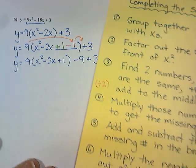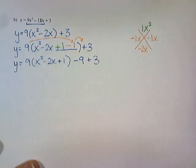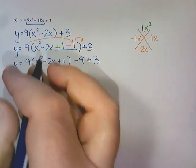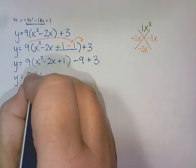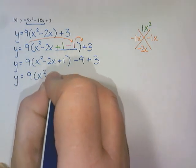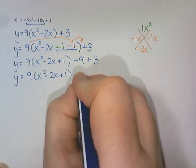All right, what does it say on the other side of my card? It says simplify the numbers outside of the bracket. So that -9 plus 3. So 9(x² - 2x + 1). Negative 9 plus 3 is -6.